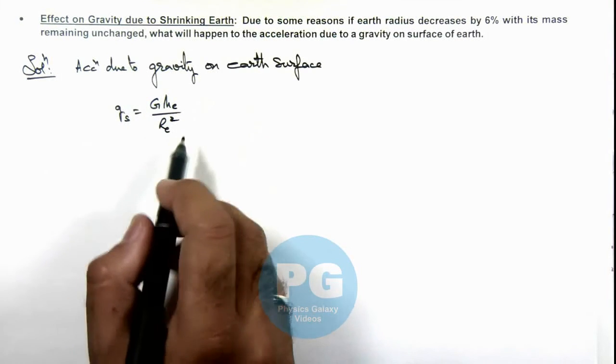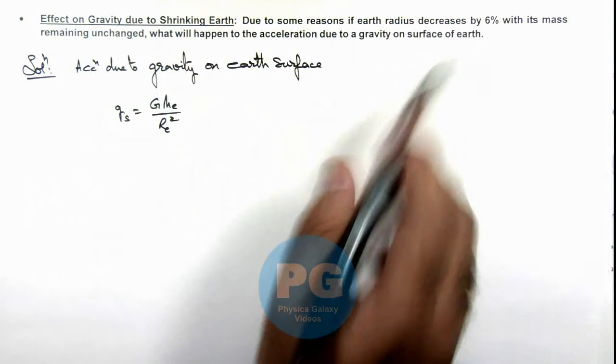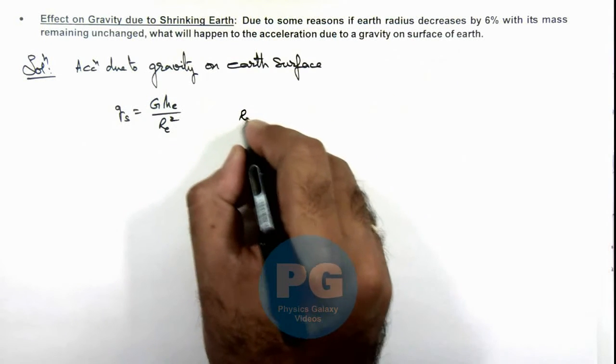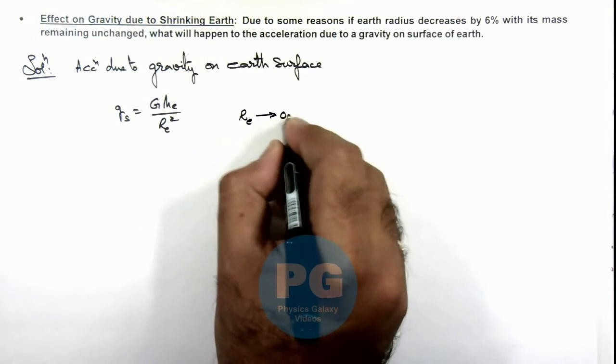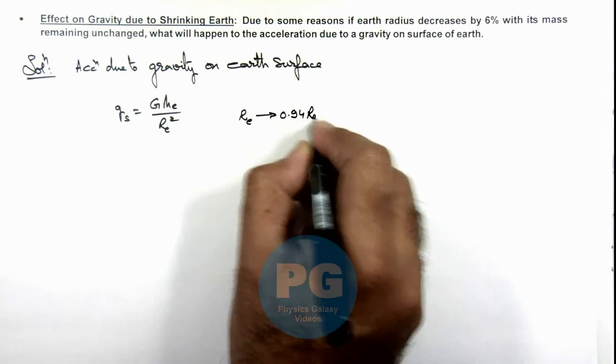Here we are given that radius decreases by 6%, which means r_e changes to 0.94r_e. See what happens.